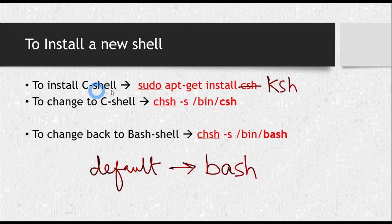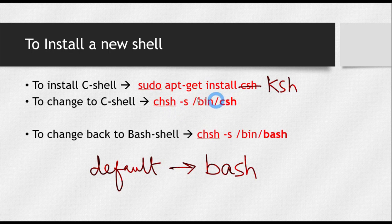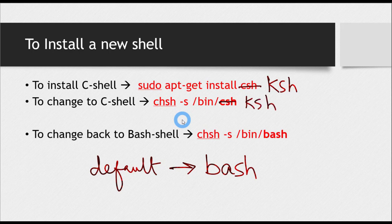Once you have installed that shell, you also have to change to it because your default shell is bash. To change to that shell, the command is chsh — that means change shell — followed by -s and then the path of the shell. The shell is installed in /bin. For example, to change to C shell: chsh -s /bin/csh. If changing to Korn shell, write /bin/ksh. And if you want to change back to bash, use the same chsh command with /bin/bash.